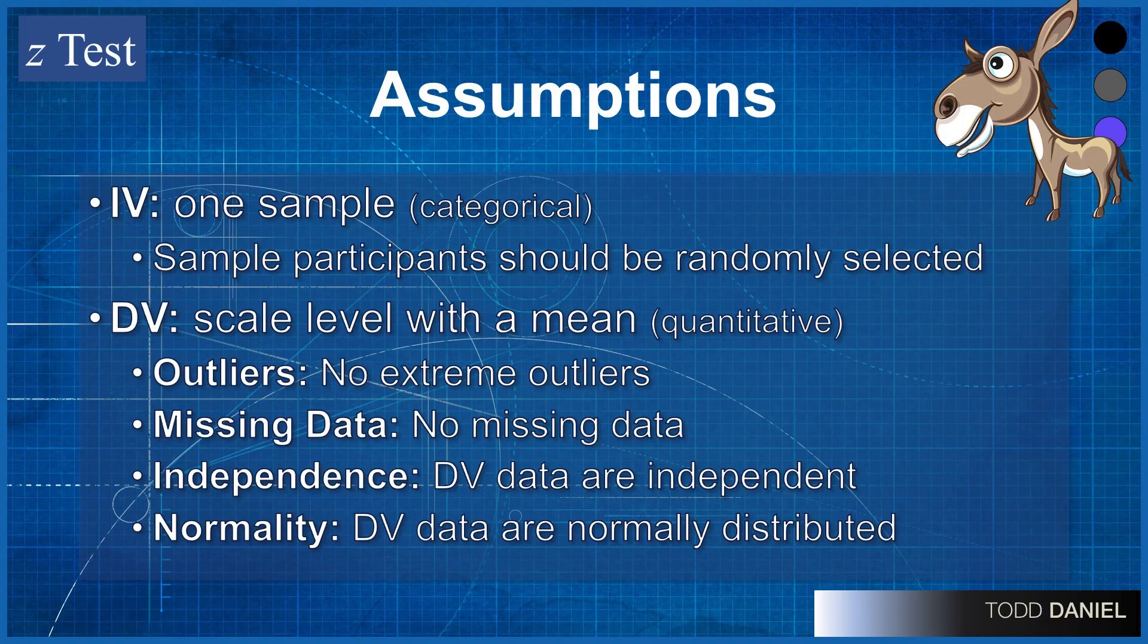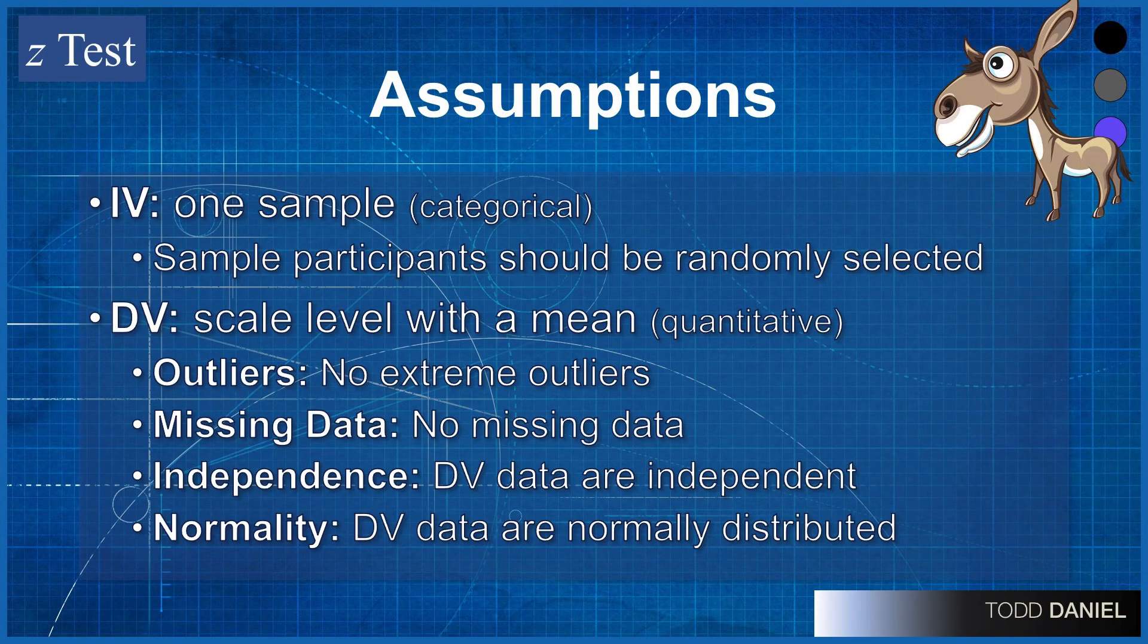There's a few other assumptions that we'll want to check. We need to make sure that we don't have any extreme outliers in our data set, no missing data in our data set, and those two assumptions are going to be met because I'm going to provide you with clean data. But if you're using your own data, it's important that you check those assumptions for your test before you begin. And then we'll be looking at the assumptions for independence and normality.